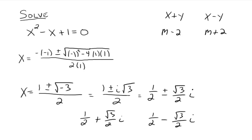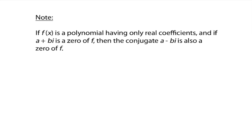That brings us to our first note: if f of x is a polynomial having only real coefficients, and if a plus bi is a zero of your function f, then its conjugate a minus bi is also a zero of f.